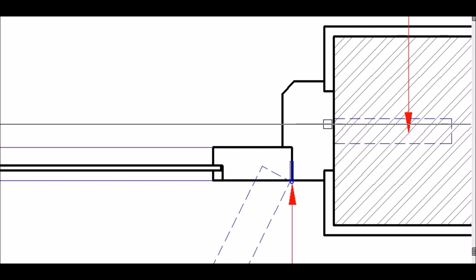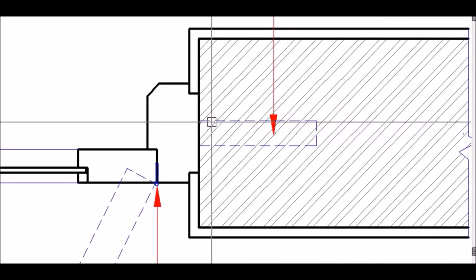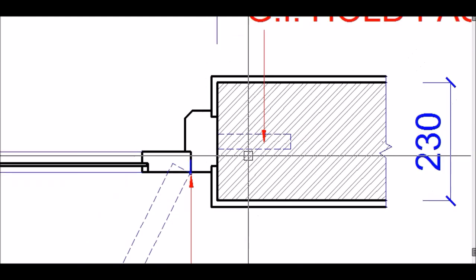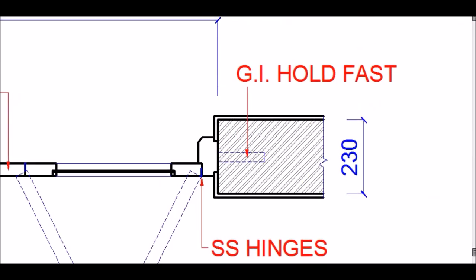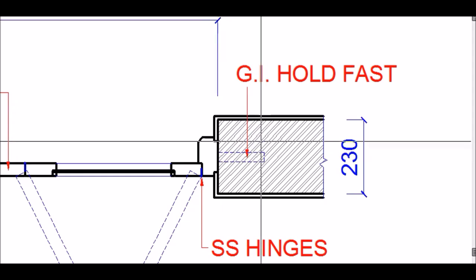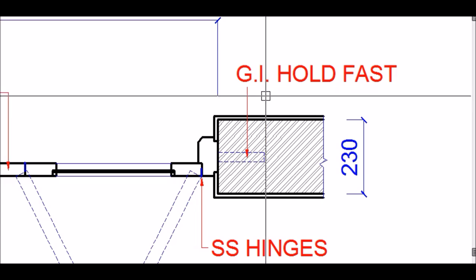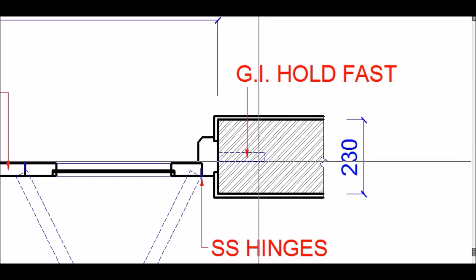The frame is secured inside the wall by means of a holdfast. This holdfast is about 150mm wide and is made out of a galvanized iron section. We will cover holdfasts in more detail in another video — it is assumed you already have some familiarity with them from your first year.